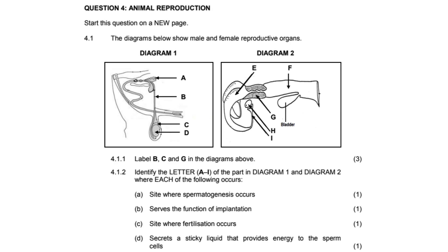Now identify a letter from A to I of the part where each of the following occurs. The site where spermatogenesis occurs is D - that is the testes. The site that serves the function of implantation, the answer is E only, which is the uterus. The site where fertilization occurs is I, in the oviduct. D secretes a sticky liquid that provides energy to sperm cells - that happens in A, the seminal vesicles.